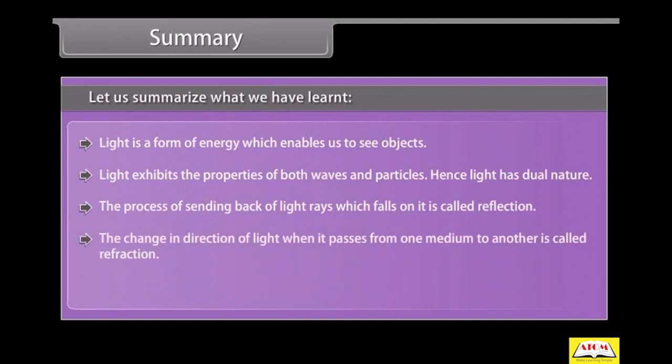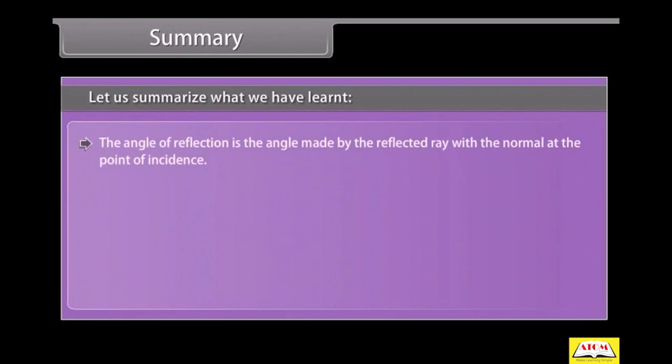The change in direction of light when it passes from one medium to another is called refraction. The angle of reflection is the angle made by the reflected ray with the normal at the point of incidence. The angle of incidence is equal to the angle of reflection.